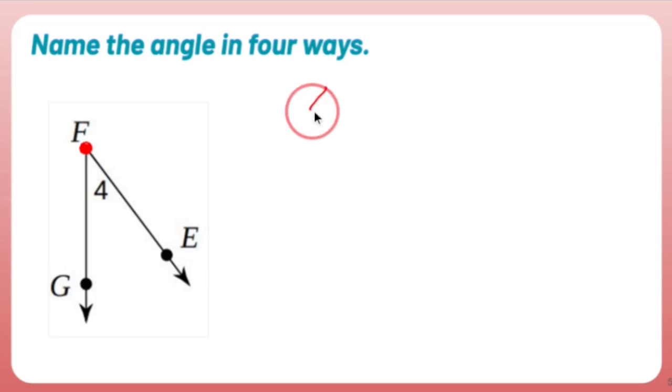One of your angle names can be angle F. Just F. As long as you use your vertex, you're not allowed to say angle G, you're not allowed to say angle E, but you are allowed to say angle F. Since it gives us that number here, I'm allowed to call it angle 4.